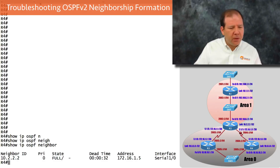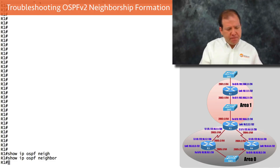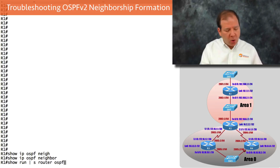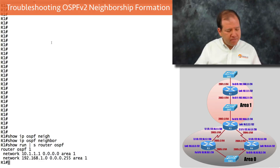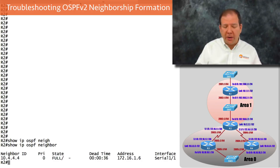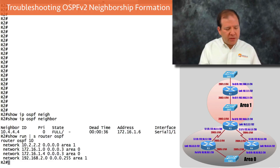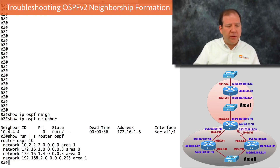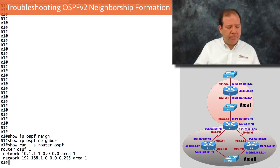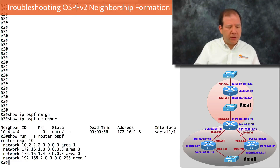Starting on R1, let's examine the OSPF configuration with 'show run pipe section router OSPF'. Then let's do the same on R2, who we need to be forming a neighborship with but are not. I'll toggle back and forth — take a look and see if you notice anything that's necessarily an issue.